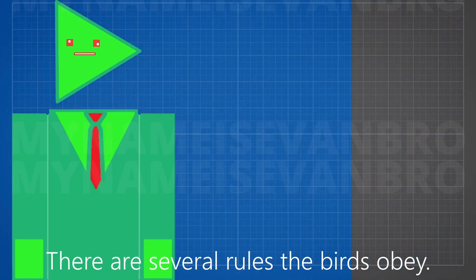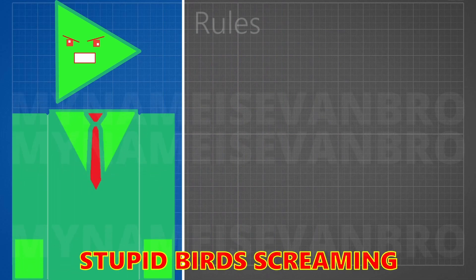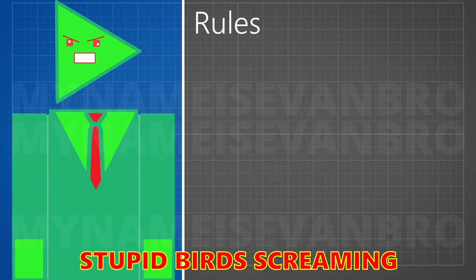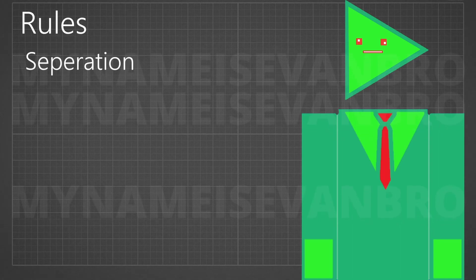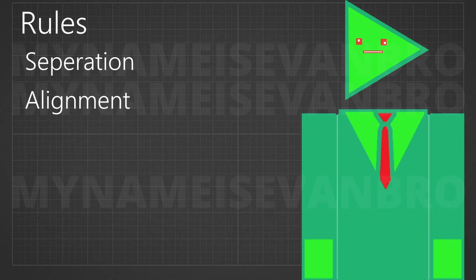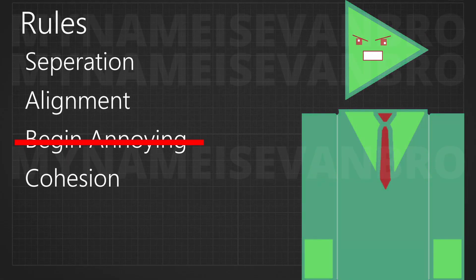There are several rules the birds obey. In general, the three rules are separation, alignment, and cohesion.